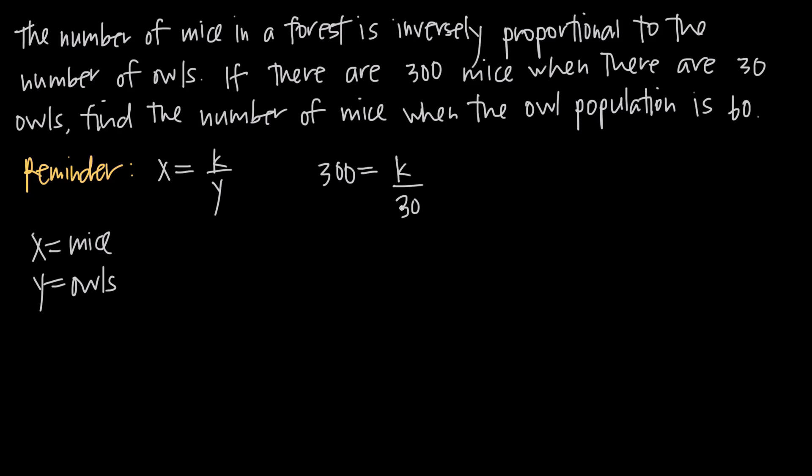So in this problem we know there are 300 mice when there are 30 owls. We're going to multiply both sides of this equation by 30. We'll get 30 to cancel on the right hand side and we'll just be left with k on the right. On the left we'll get 300 times 30 which is just going to give us 9,000. So we get k is equal to 9,000.